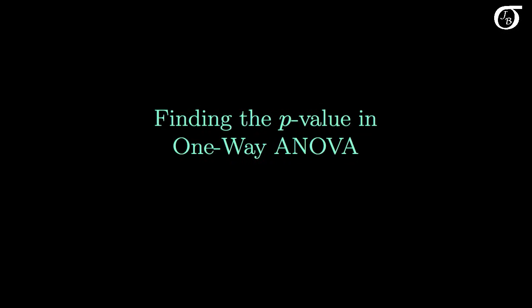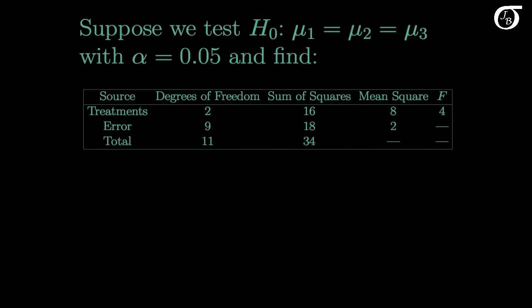Let's look into finding the p-value in one-way ANOVA. In this video I'm going to find the p-value using an F table and using R. Suppose we wish to test the null hypothesis that three population means are all equal, and we feel that a choice of alpha of 0.05 is reasonable in our example.